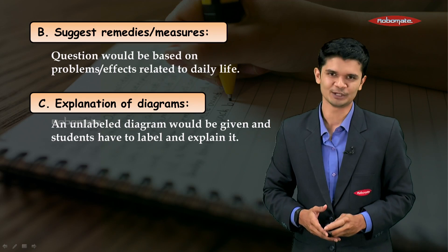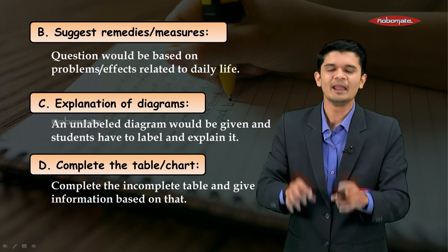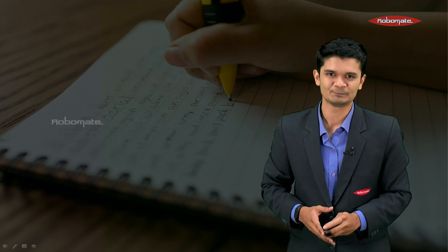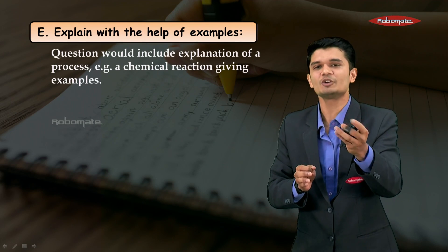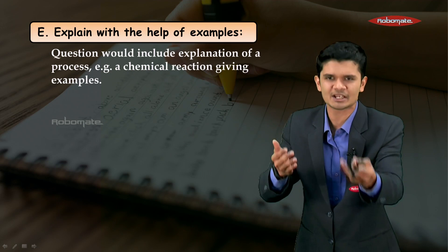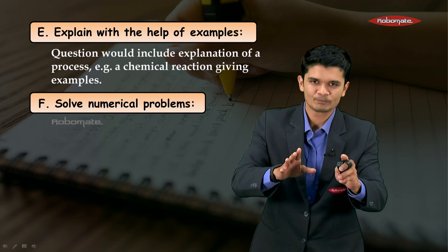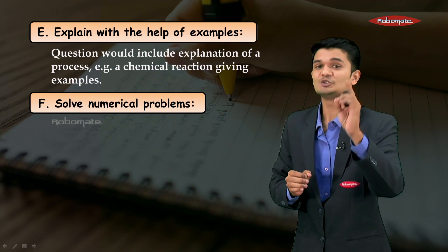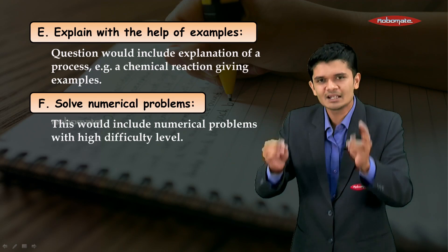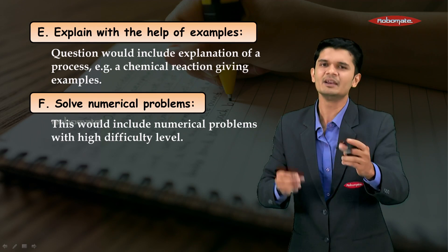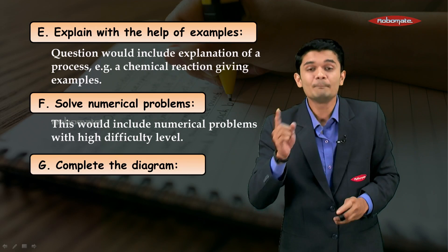Complete the table or chart questions are very easy — you have a simple incomplete table and just need to fill in the blank spaces. For explain with the help of examples, questions include an explanation of a process — for example in chemistry, you have to explain a chemical reaction giving appropriate examples. You will also come across numericals in this section; these will be slightly more challenging but still based on textbook questions, with slight changes in values.